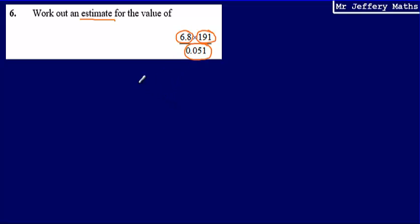So 6.8 to one significant figure is going to be 7. 191 to one significant figure is going to be 200. And 0.051 to one significant figure is going to be 0.05.